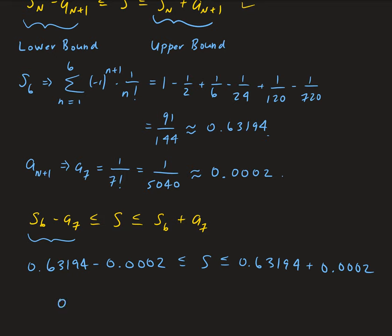This gives us 0.63174 less than or equal to s, and s less than or equal to 0.63214. Those are the bounds on our summation. Whatever the actual value of the series is, it's going to fall between 0.63174 and 0.63214.